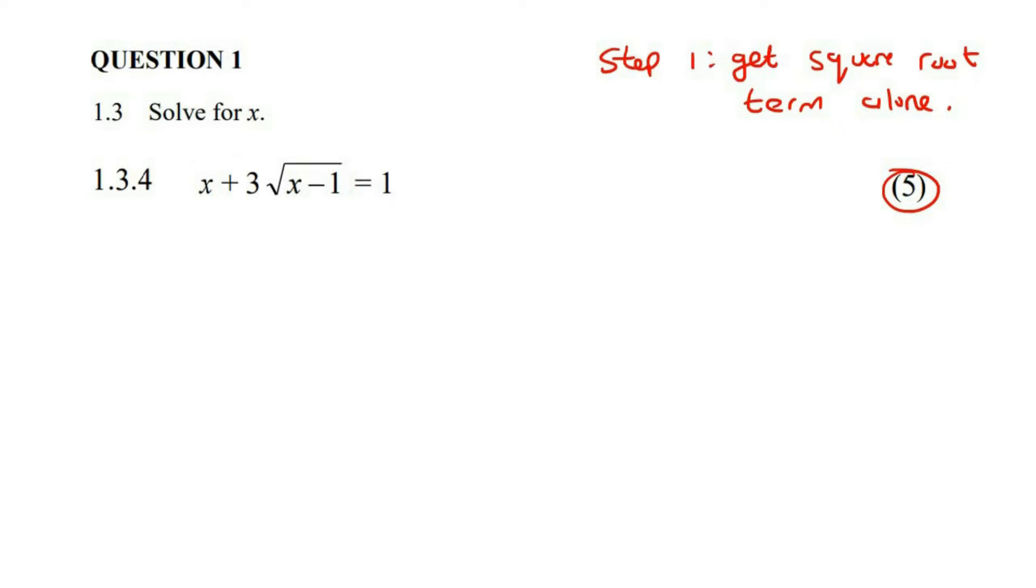What that means is that this is one term. So that three can be friends with the square root and they can move together for now. Maybe later we'll tell the three you're being a bit clingy, but for now they can stay together.